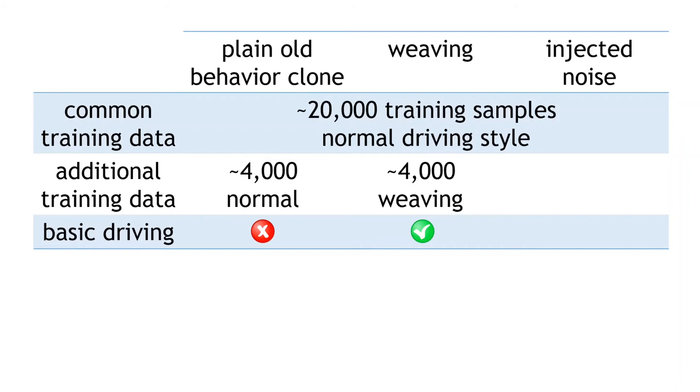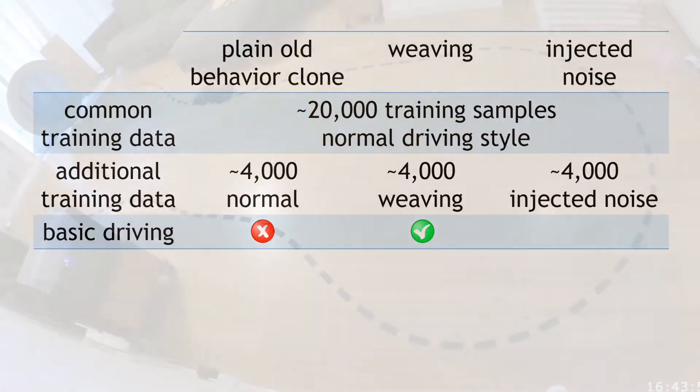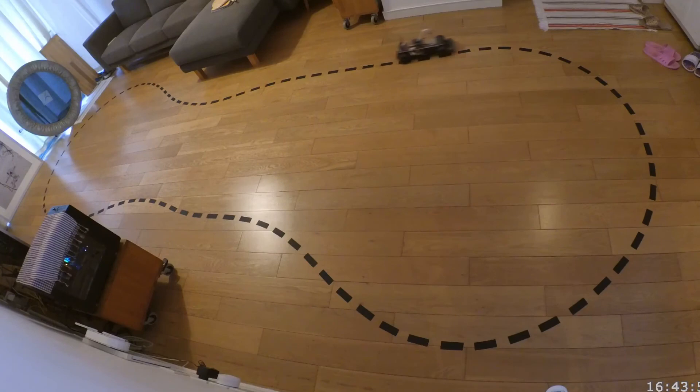Now for the noise trained policy. We combine the common 20,000 images for normal driving with the additional 4000 images obtained from driving with the injected noise and train the new policy. We then gave it a go at driving around the new track.